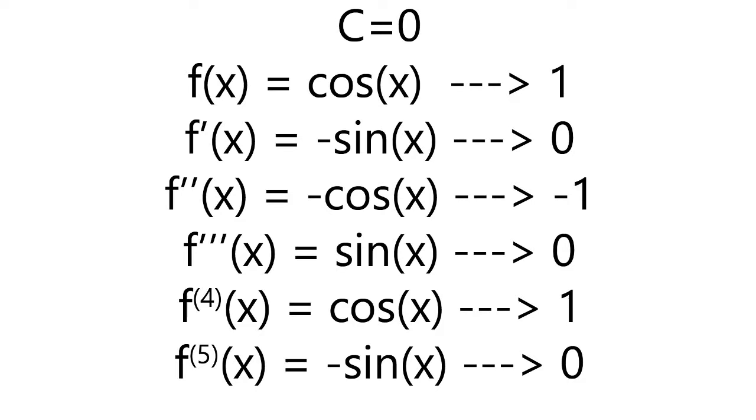All right, so the first step when we're doing one of these problems is we have to actually find the fifth degree Maclaurin polynomial for cos(x). So our center is going to be at zero. So as you can see, we start with f(x) = cos(x), and we plug in the center, which is zero, into that equation, and we're going to get 1. And as you can see, we keep deriving it.